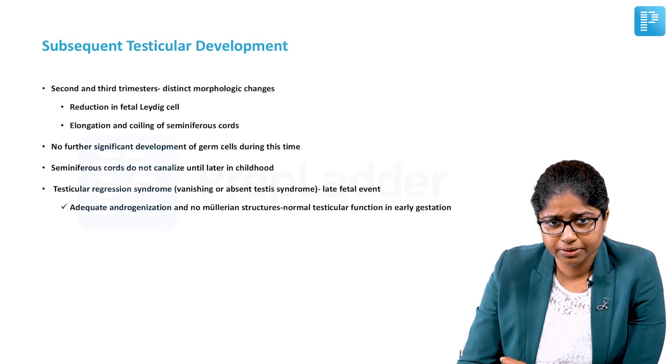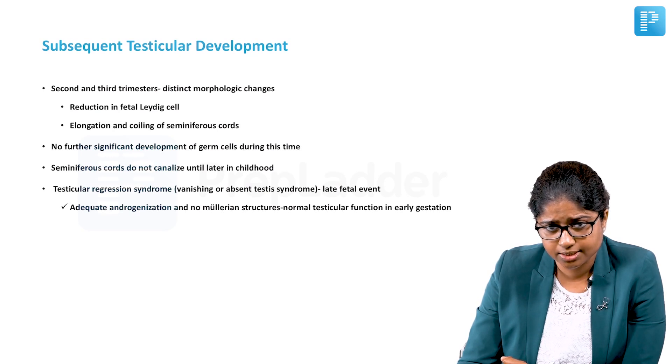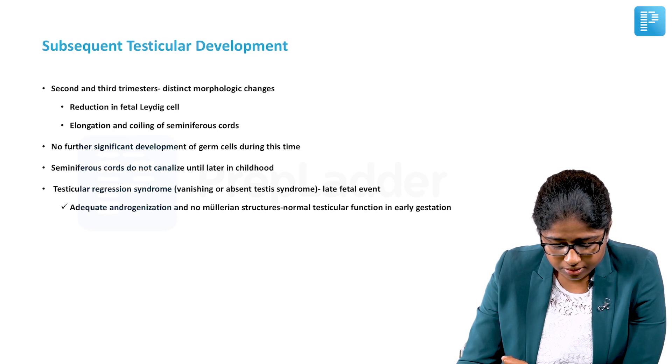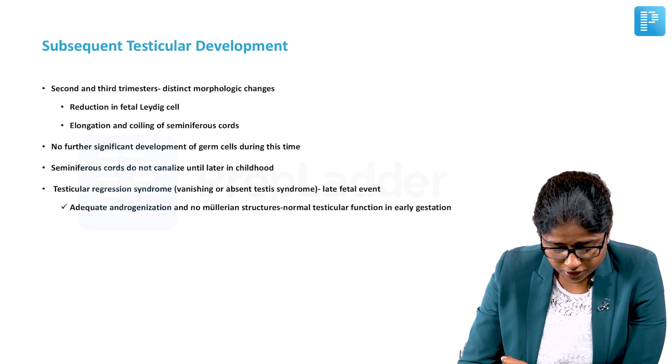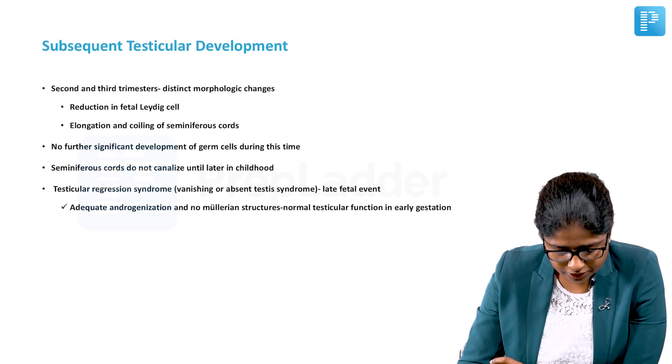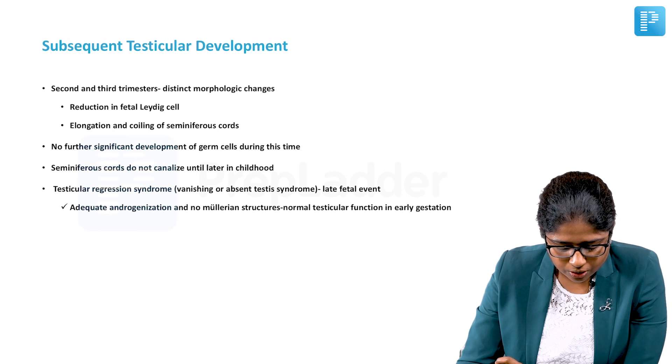Following that, the subsequent testicular development in the second and third trimesters, there are distinct morphological changes. There is a reduction in the fetal Leydig cell number, elongation and coiling of the seminiferous tubules. There is no further development of germ cells at this time. We will talk about where the germ cells come from in the next slides.